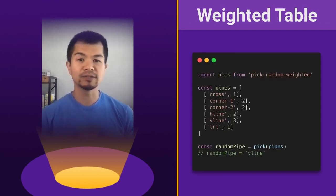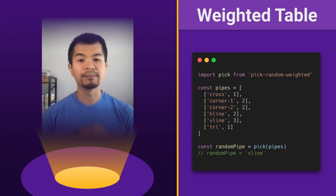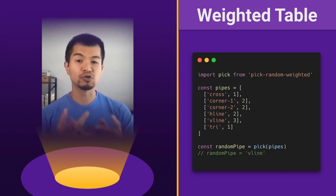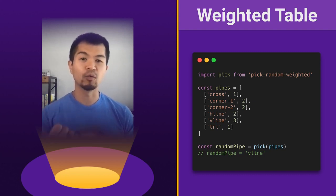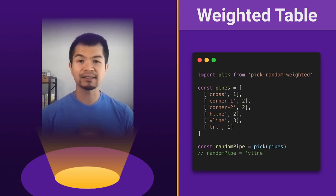So this is just some code. We're using the library pick-random-weighted. You can just npm install it and we'll show you how to use it next in our code example. But basically you would give it an array of tuples, or what is a two entry array, with the first one being the pipe name and the second index in the array being the weight. So before we had one, two, and three. And then the library basically takes care of it. You just call pick given that table and it'll give you the result.